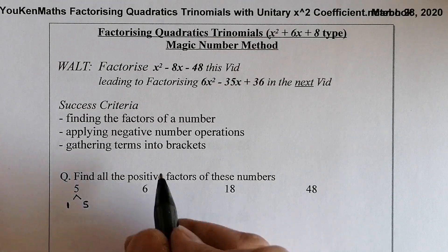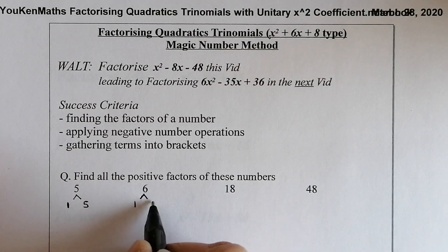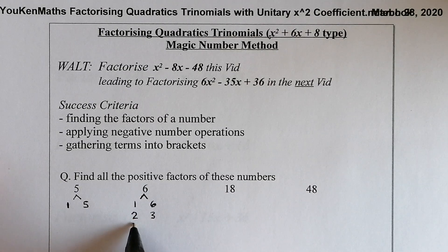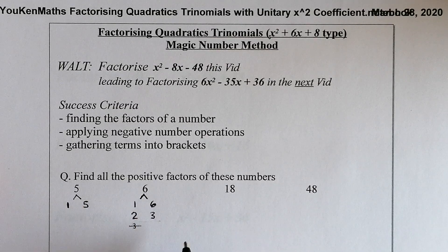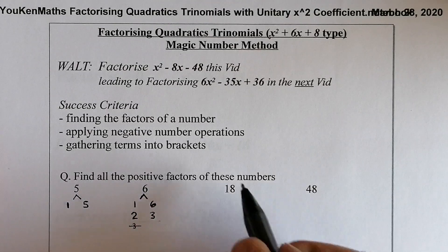For 6, using the same method starting with 1: 1 times 6, 2 times 3, and then 3 I've already got, so I stop. The factors of 6 are 1, 2, 3, and 6.